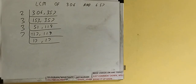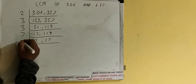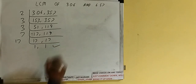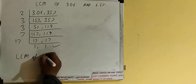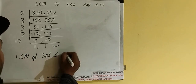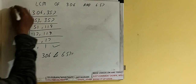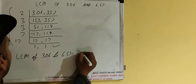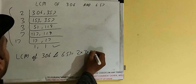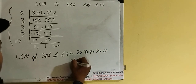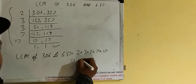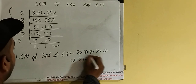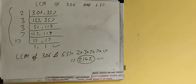Now neither number is divisible by 7. Looking at 17, it is a prime number, so it is only divisible by itself, 17. Dividing both by 17 gives us 1 and 1. Once we reach that, we stop. The LCM of 306 and 657 is found by multiplying everything on the left-hand side: 2 × 3 × 3 × 7 × 17, which equals 2142.